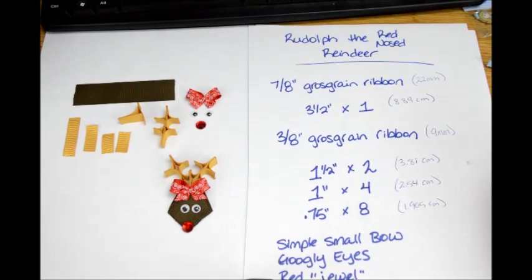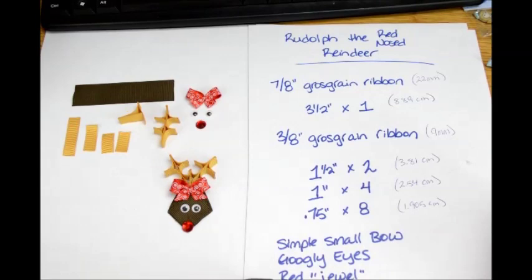Here's your supply list. You're going to need seven one-eighth inch grosgrain ribbon: one three and a half inch piece. Then for three-eighths inch grosgrain ribbon, you're going to need two one and a half inch pieces, four one inch pieces, and eight three-quarter inch pieces.